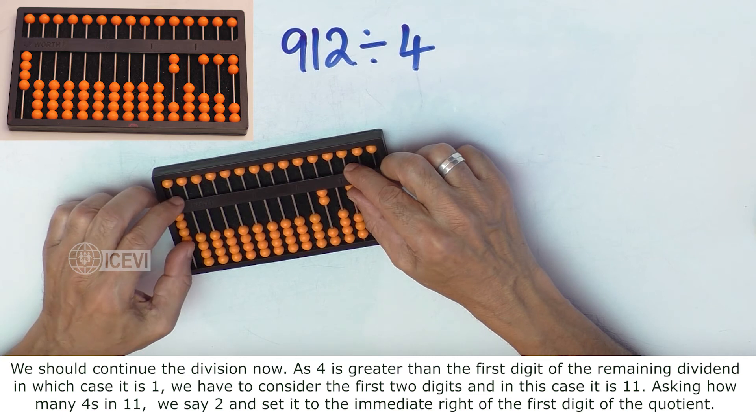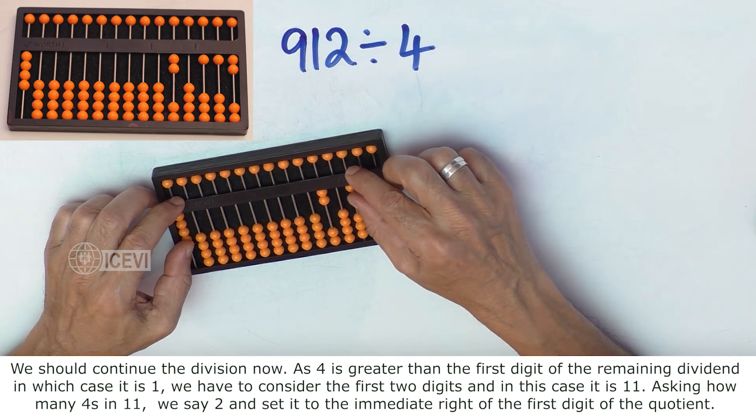As 4 is greater than the first digit of the remaining dividend, in which case it is 1, we have to consider the first 2 digits. In this case, it is 11.